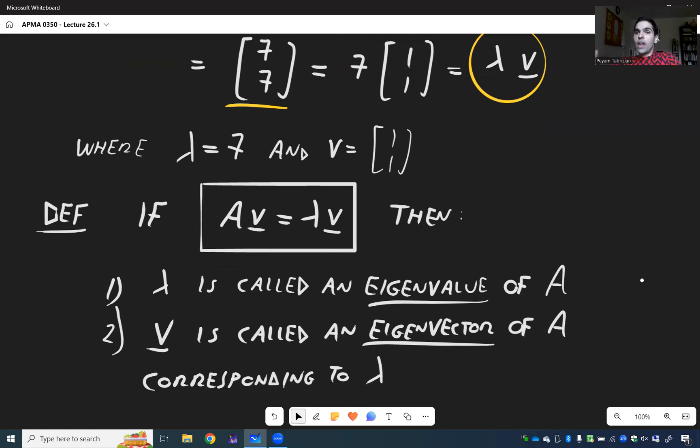Now, what is this weird word, eigen? It comes from German, which means self or proper. Someone who's very selfish, you call them eigensichtig, who only views themselves. But here, you have to understand, it's more important. Think important value and important vector.